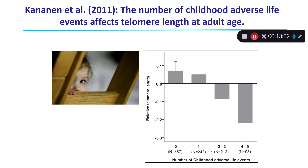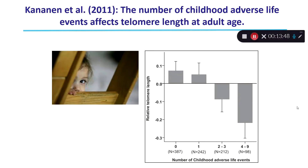Scientists have started to look at telomere length as a telltale sign of aging and social components. Kenan et al. in 2011 looked at shortened telomeres as an effect of adverse childhood events. They found that children with no adverse life events had relatively long telomeres compared to a control. One adverse childhood event didn't really change telomere length, but when children experienced two, three, or four to nine adverse childhood events, their telomeres were shorter compared to the control.